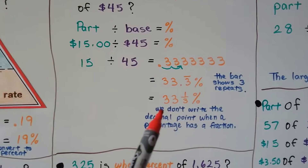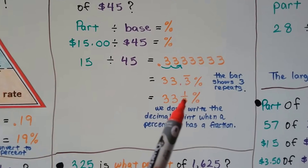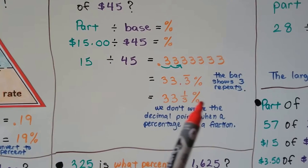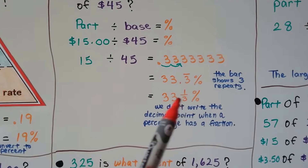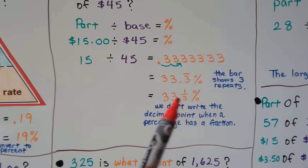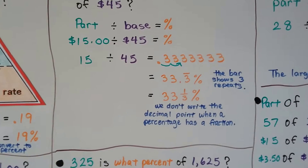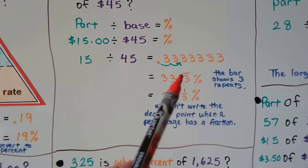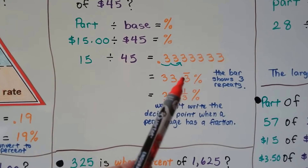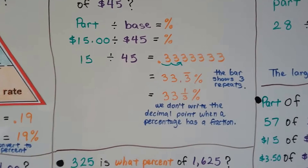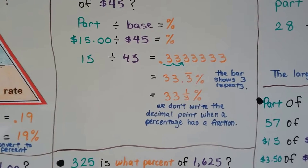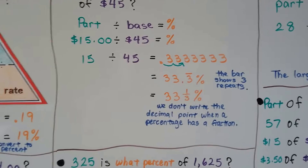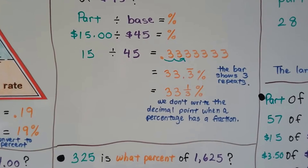If we write it as a fraction, we put 33 and one-third percent, but we don't write the decimal point between the 33 and the fractional one-third. We would only write it with a decimal point if we're writing it in decimal form with the bar on top. If you're writing it as a fraction, there's no decimal point there.